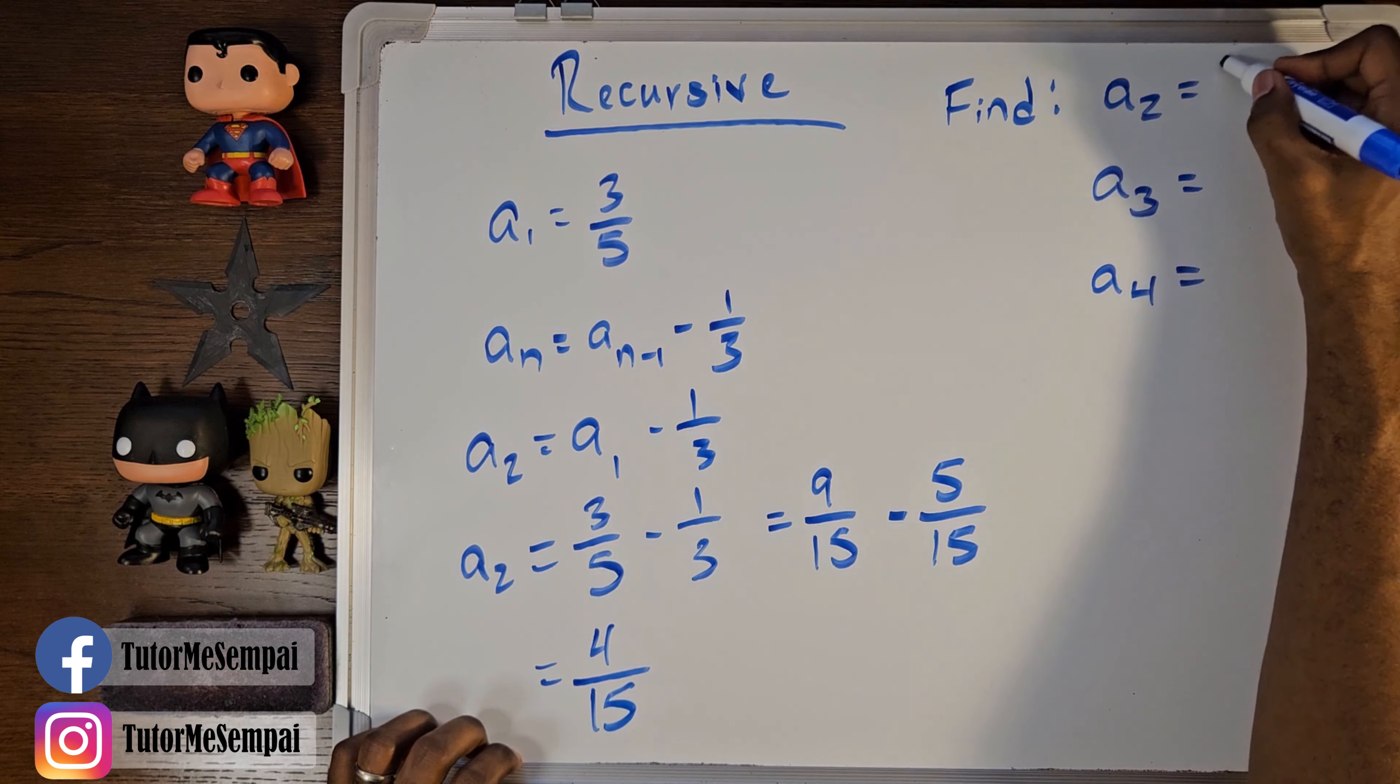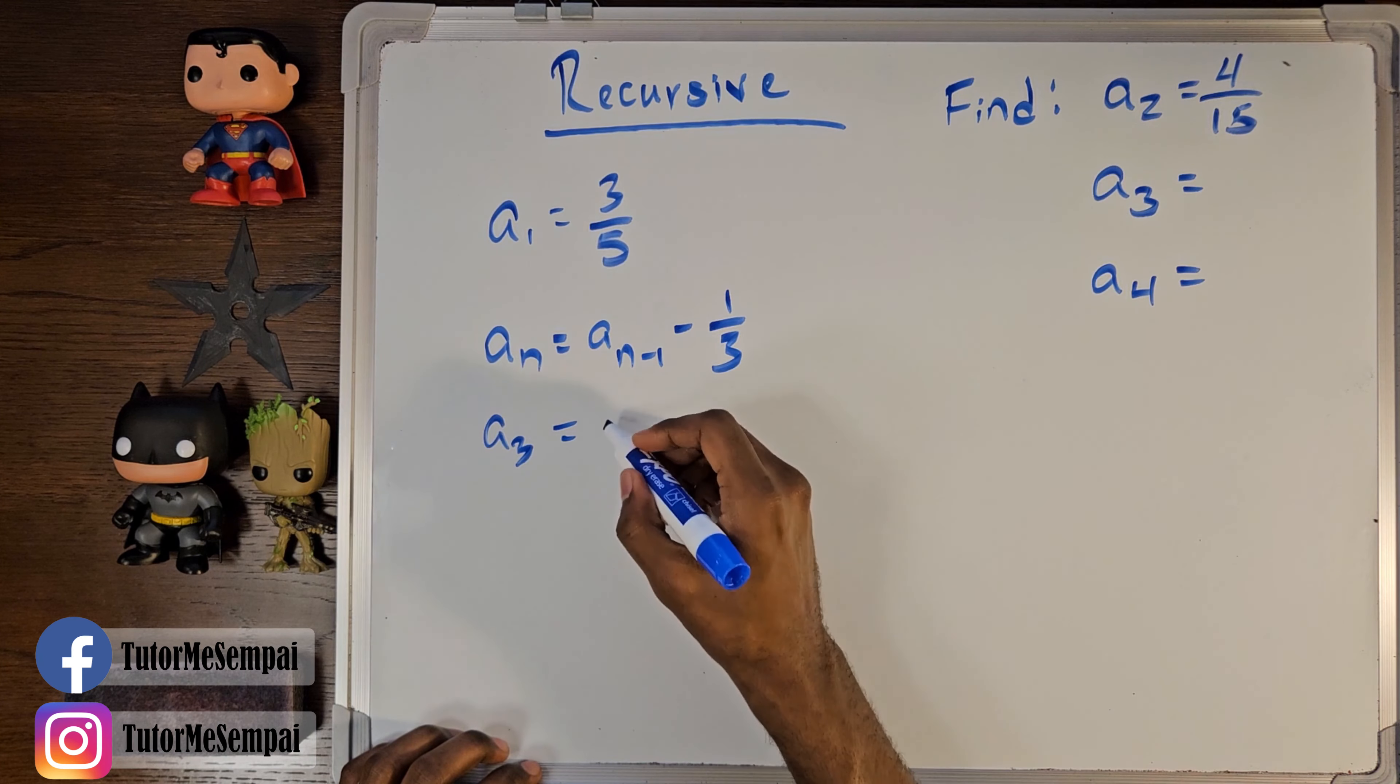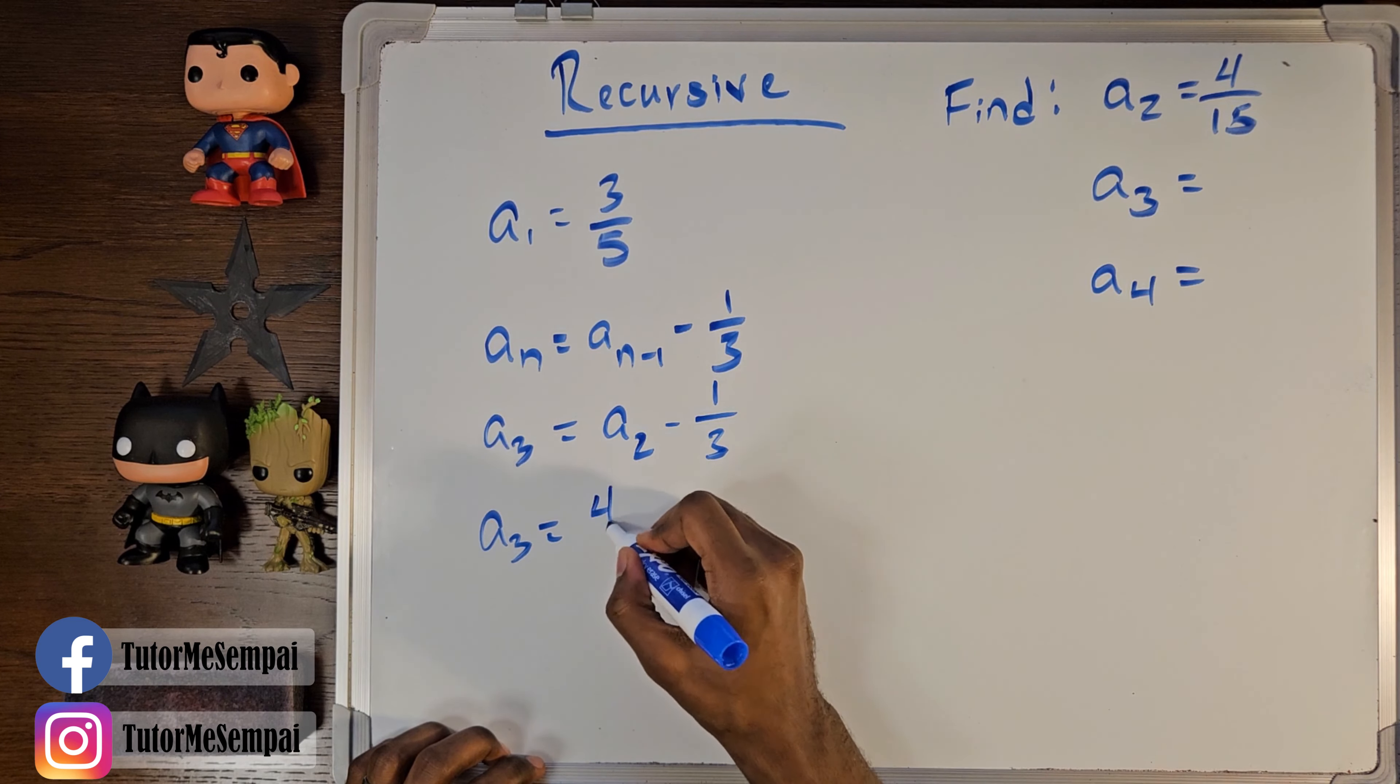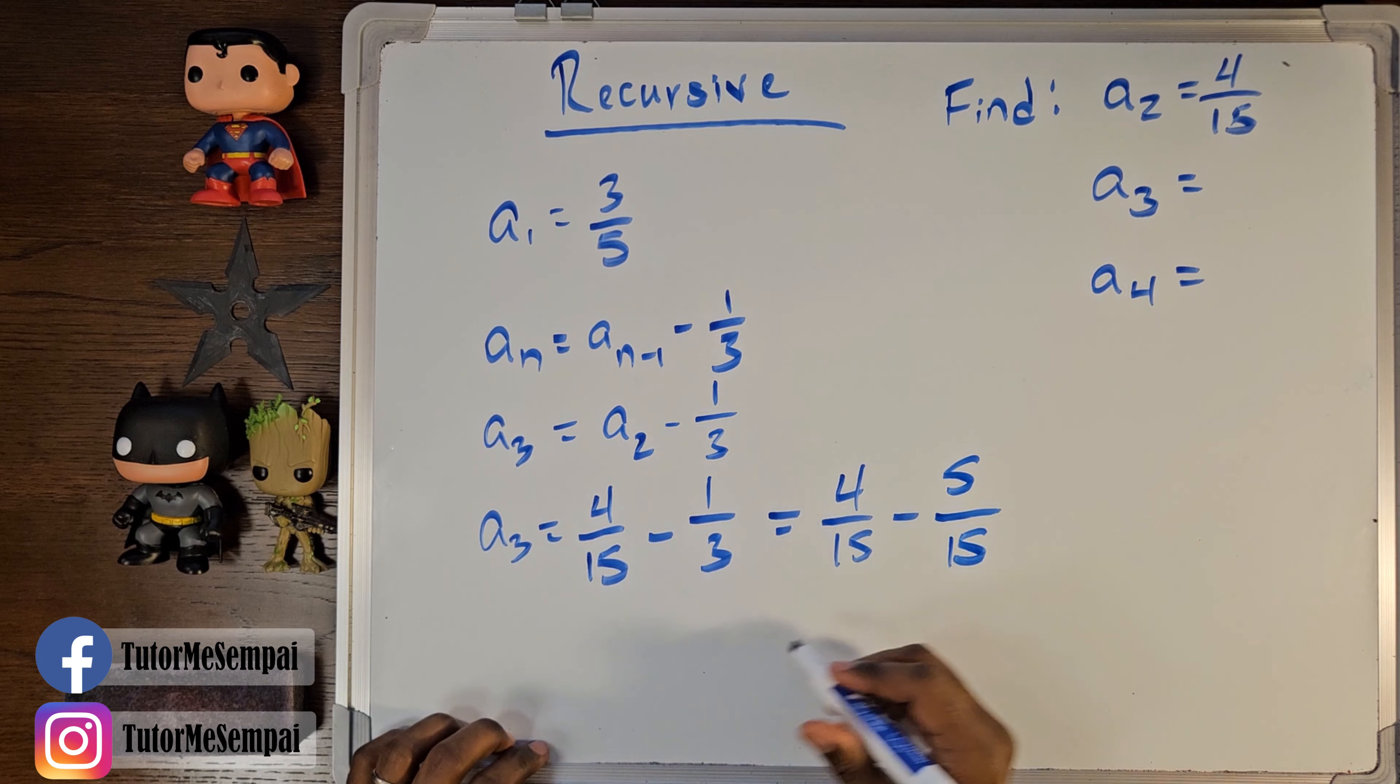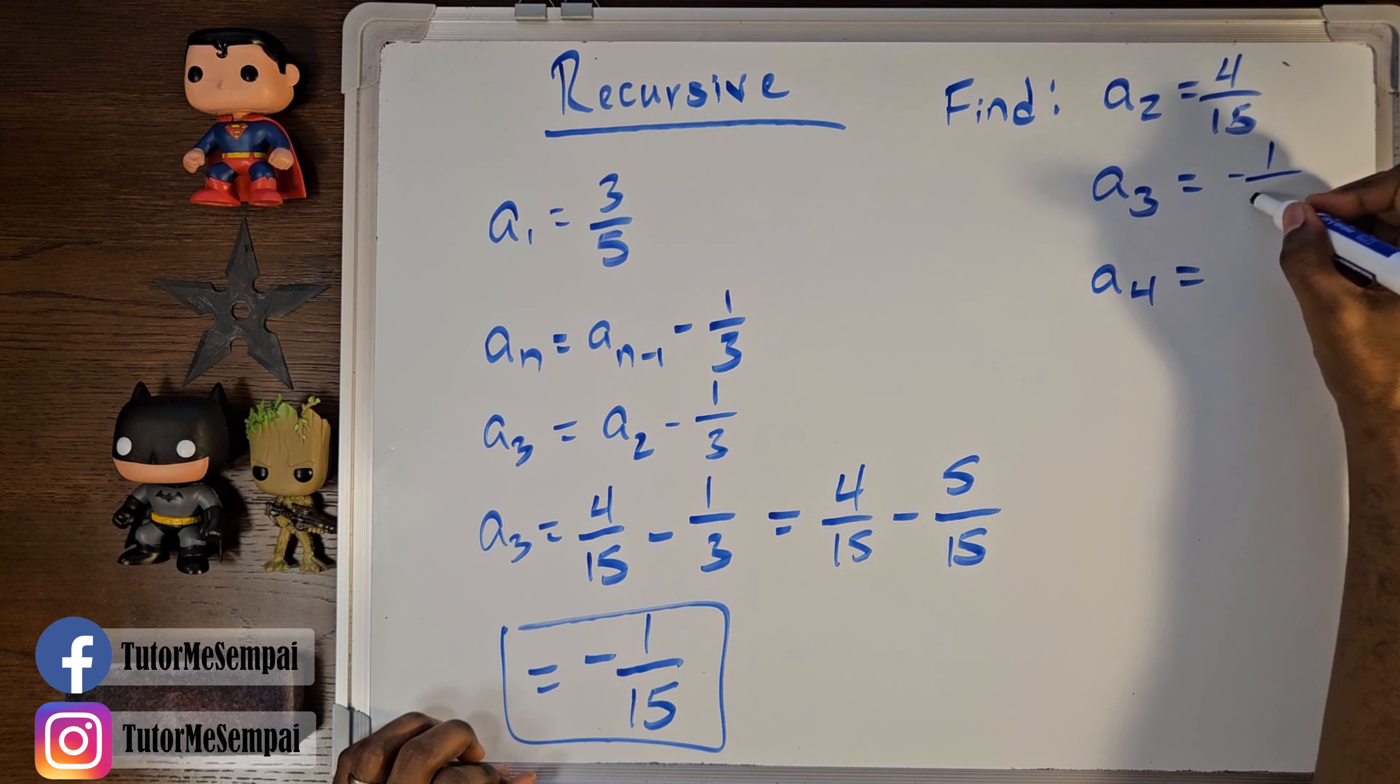So, our a sub 2 is going to be 4 over 15. Now, if we're trying to find a sub 3, we would need to plug in our a sub 3 here. So, our 3, which means we plug in the 3 there, means we have to use a sub 2. Once again, it's recursive. So, we're going to do the same thing. We're going to plug in what we just found to be our a sub 2, which is 4 over 15, minus 1 third. And when we do that, we're going to simplify this to be 4 over 15, minus 5 over 15, which simplifies to a final result of negative 1 over 15. So, this is going to be our a sub 3, negative 1 over 15.